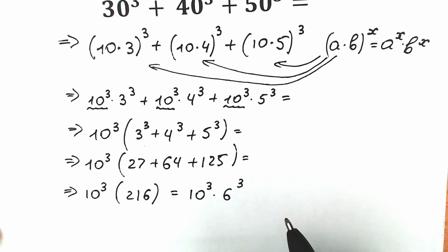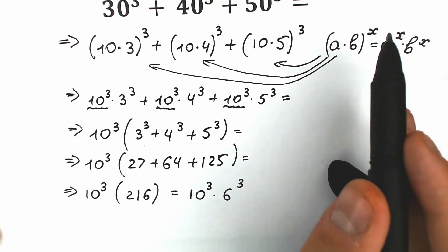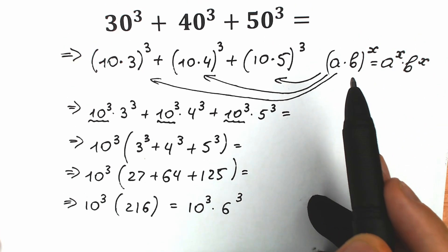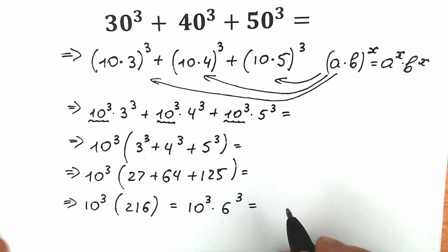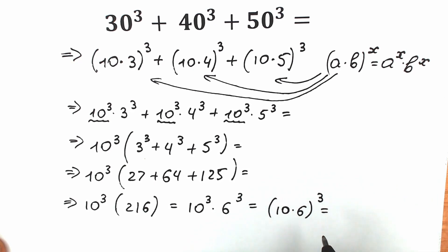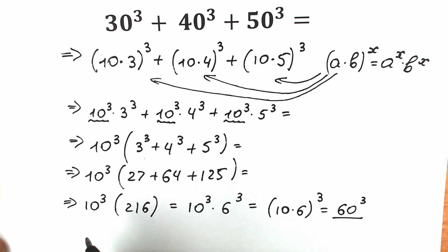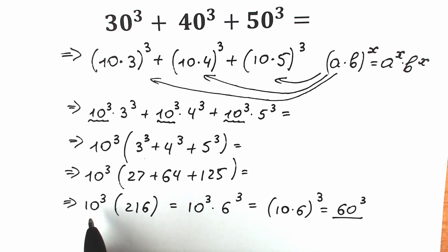Using the reverse property — a to the power x times b to the power x can be written as a product inside one parenthesis — we can write it as (10 times 6) to the power 3, which equals 60 cubed. That is our answer. We can also write it fully as 216,000.